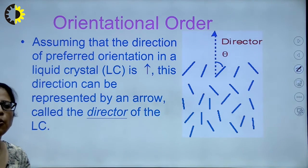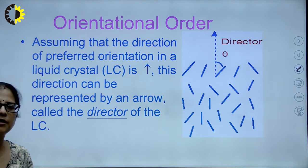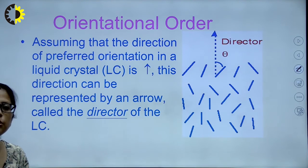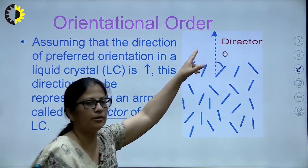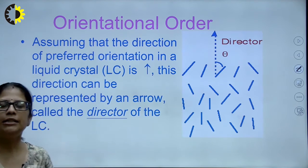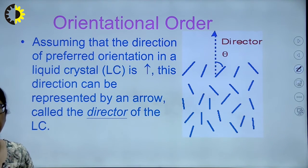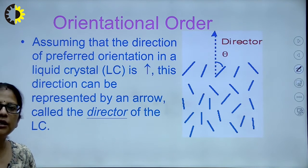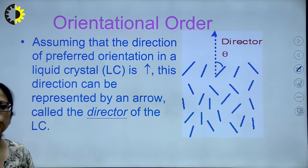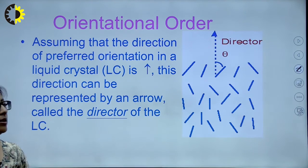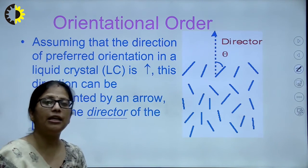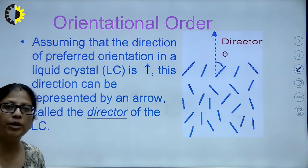Now, coming to the orientational order possessed by the liquid crystalline state: assuming that the direction of preferred orientation in a liquid crystal is in a particular direction, this direction can be represented by an arrow and is called the director of the liquid crystal. The director is nothing but the preferred orientation in which the molecules preferably tend to orient themselves.